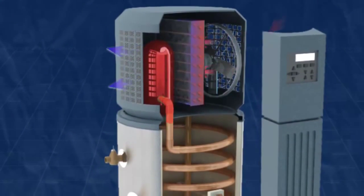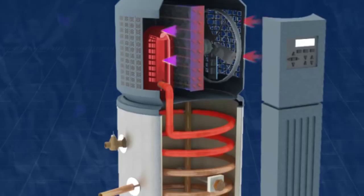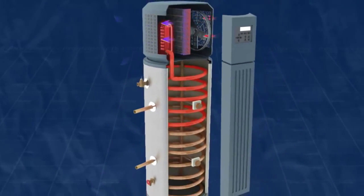The hot vapor refrigerant then flows through a copper coil in the water tank, heating the water and cooling the refrigerant.